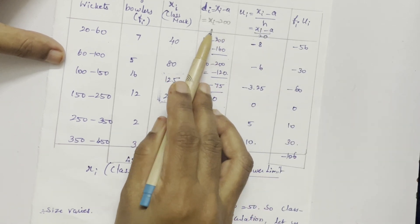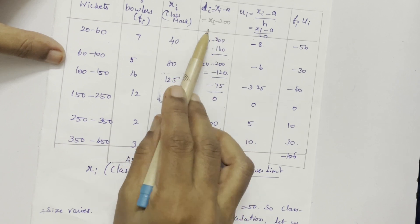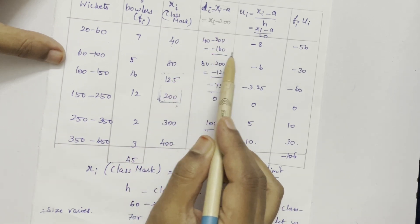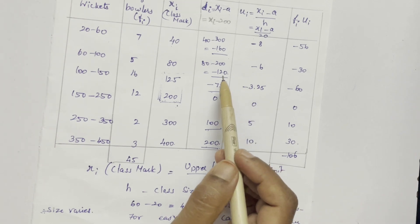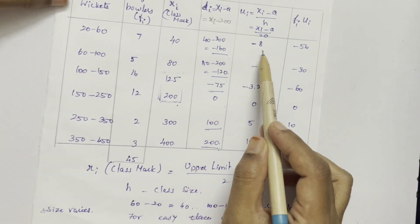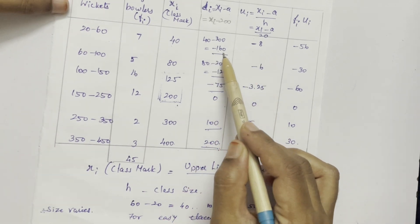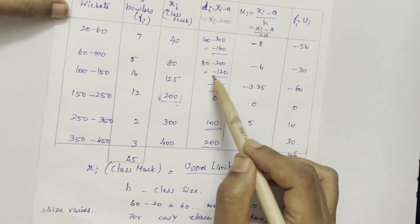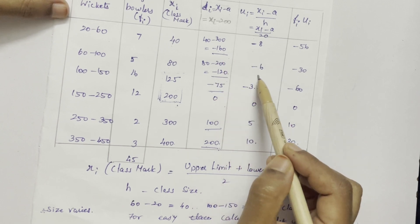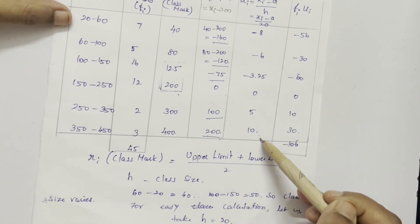So that is XI minus A by 20. So XI minus A is these numbers. So we are dividing it by 20. The common divisor is 20. We have divided here. Minus 160 divided by 20 is minus 8. Minus 120 by 20 is minus 6. We have calculated UI.